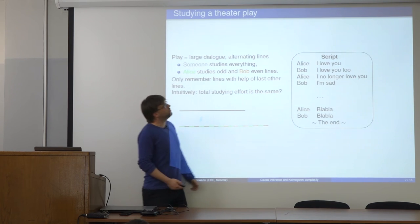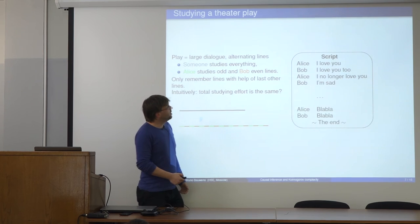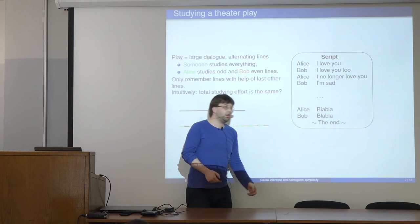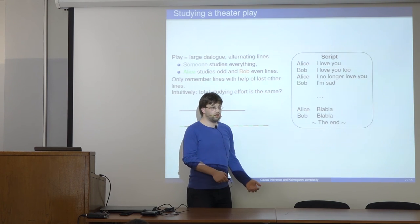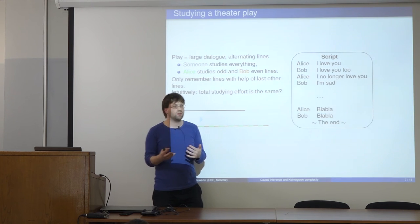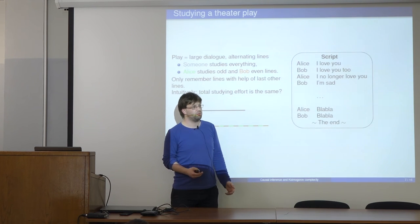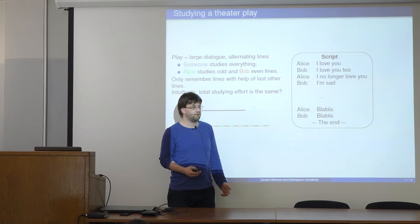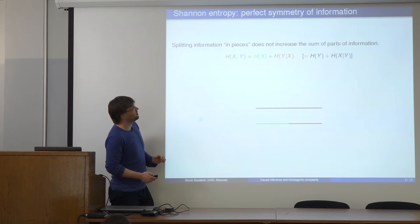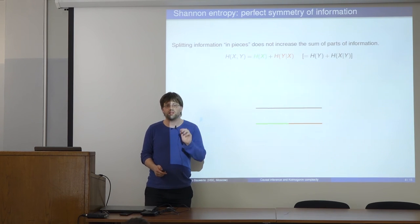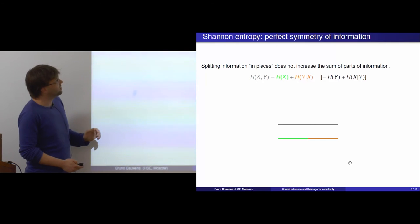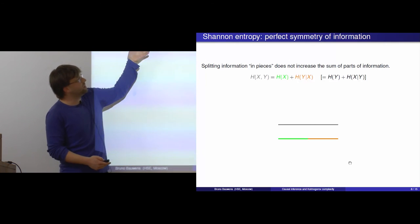And it turns out to be much more work in the two-actor setting. Furthermore, imagine you ask the actors: what if you flip the lines so that Alice says Bob's lines and vice versa? People will say this will be much more work in the two-actor setting. This is a philosophical introduction to the problem. Let us look at what happens with Shannon entropy in this setting.